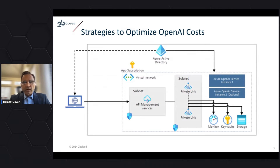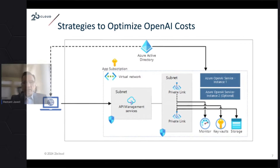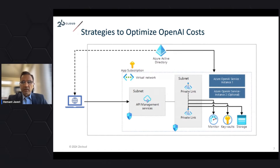This is an architectural strategy approach to optimize your OpenAI costs. Any infrastructure you build to use OpenAI should have an API management service. API management will mediate your invocation of the OpenAI service across different zones and regions, and it ensures that anything you're calling is authenticated using appropriate authentication services. That's the second strategy to pursue.